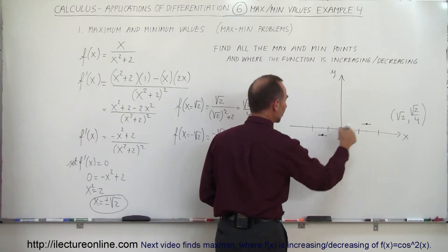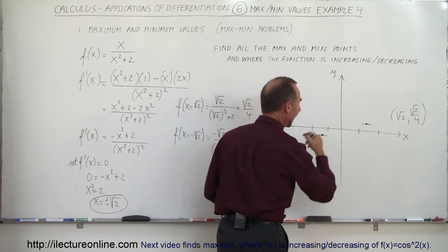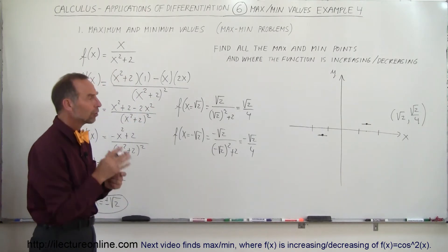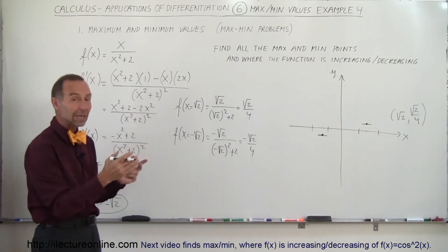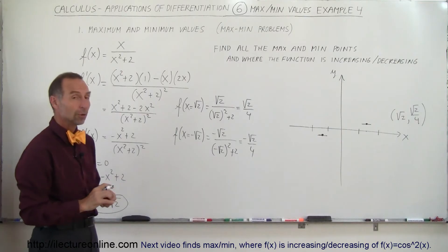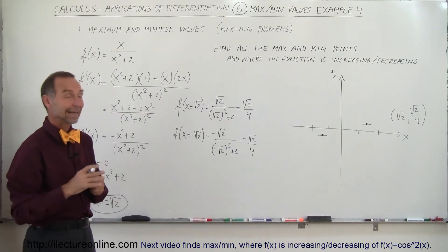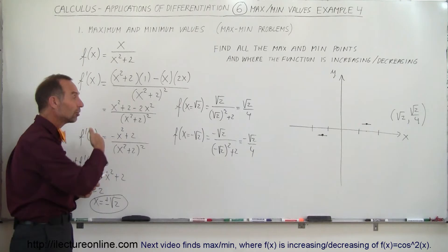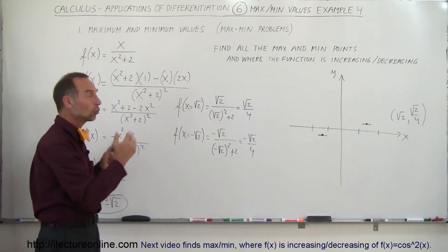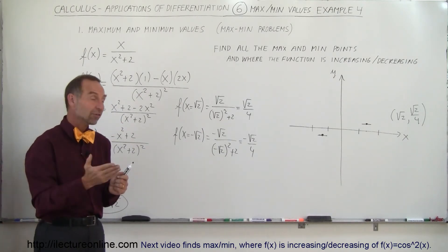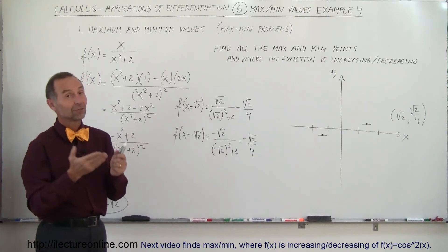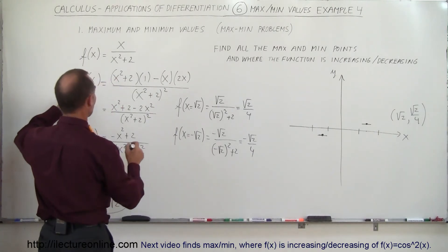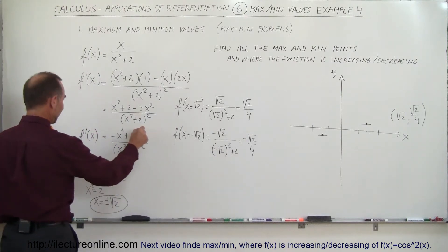Those are the two critical points — they will be maximum and/or minimum values. Now we need to know what the function does to the left, in between, and to the right of those two critical points. We'll try some test points and plug them into the derivative to see what the slope is in those regions, because positive slope means the function is increasing and negative slope means decreasing.